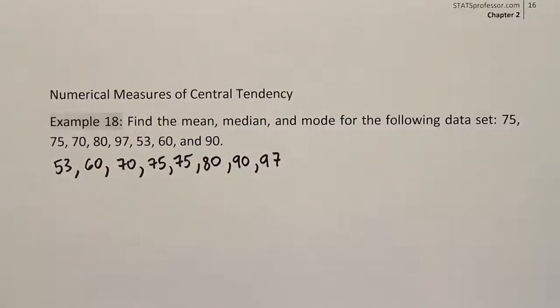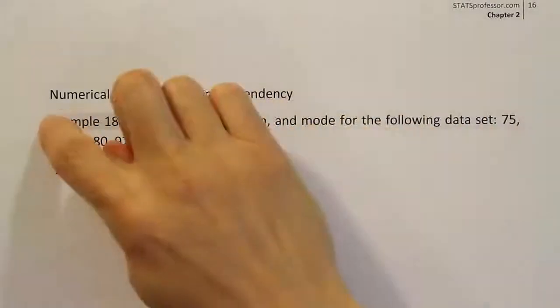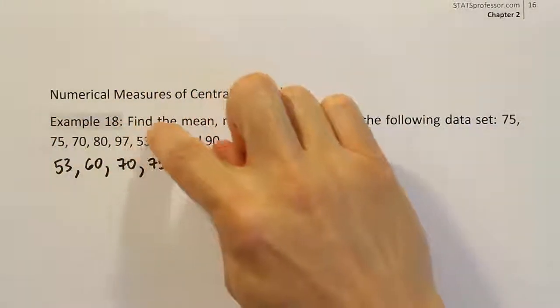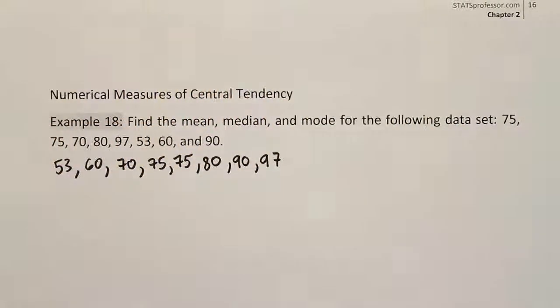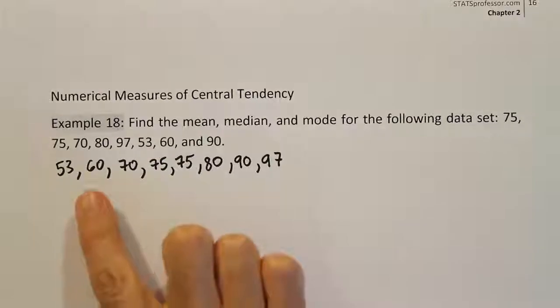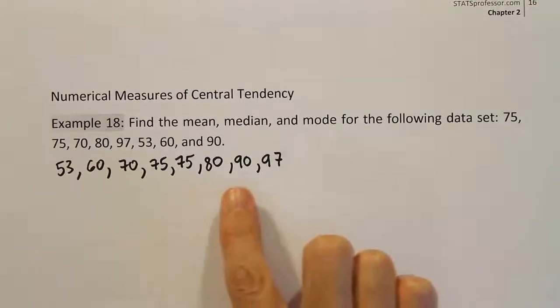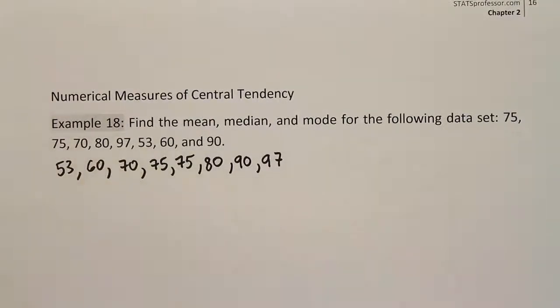Let's make sure we didn't leave anything out. I'm going to count up what I have here: 1, 2, 3, 4, 5, 6, 7, 8 numbers. And I have 1, 2, 3, 4, 5, 6, 7, 8 numbers. So I believe I have everything accounted for.